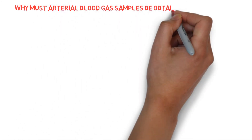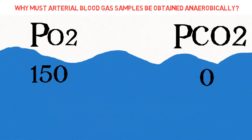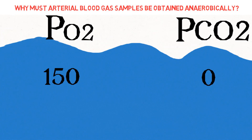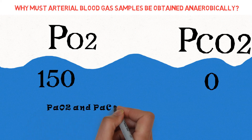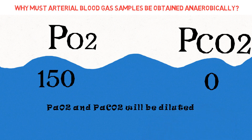Why must arterial blood gas samples be obtained anaerobically? A common pre-analytic error related to blood gases is contamination of the sample with room air. At sea level, air has a PO2 of about 150 mmHg and a PCO2 of about 0 mmHg. Thus, if the sample is contaminated with air, the measured PO2 of the sample increases if the true value is less than 150 mmHg, and decreases if the true value is more than 150 mmHg. Contamination of the sample with air lowers the PCO2 of the sample, with a result of increasing pH.